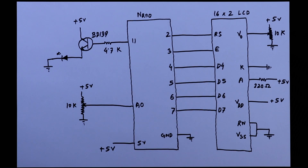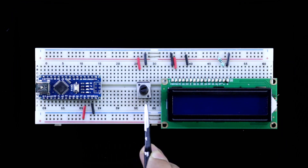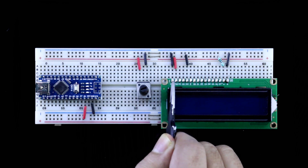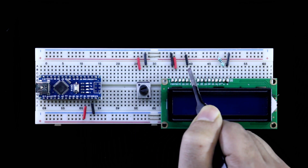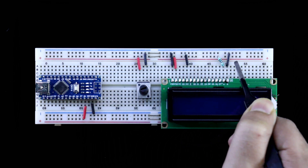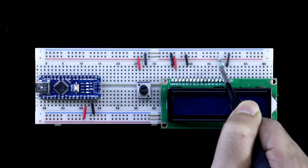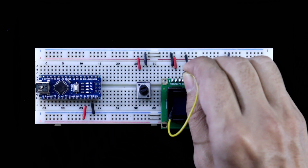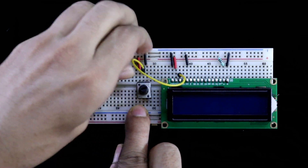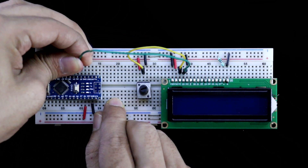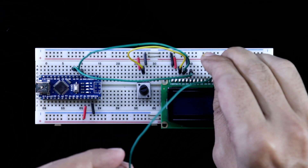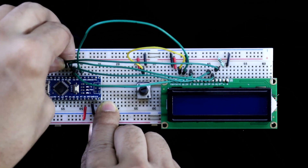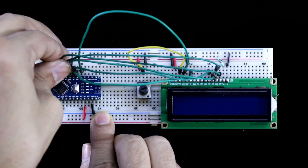Now we are going to see this in practice. Here is the Arduino Nano. This potentiometer is for the display. 5V and ground are connected to the positive and negative rails. VSS and VDD are connected to the positive and negative rails. The anode is connected to the positive rail with a 220 ohm resistor. Both ends of the potentiometer are connected to the positive and negative rails. The V0 pin of the display is connected to the middle pin of the potentiometer. RS goes to pin 2, pin E to pin 3, D4 to pin 4, D5 to pin 5, D6 to pin 6, and D7 to pin 7. The display is now connected.